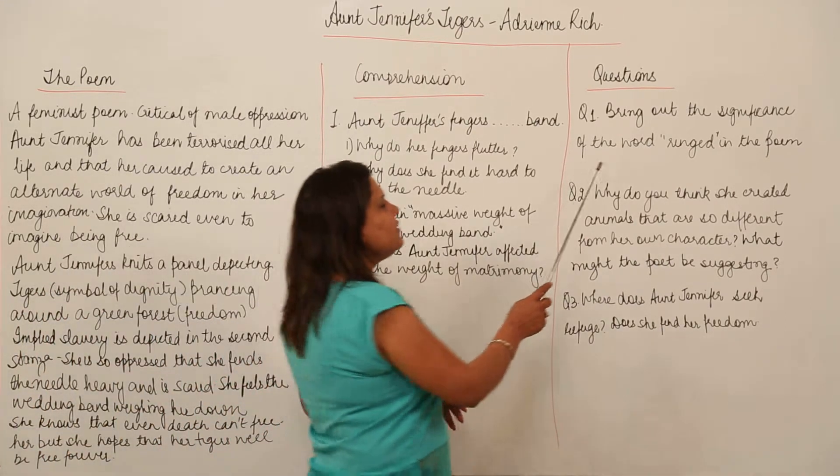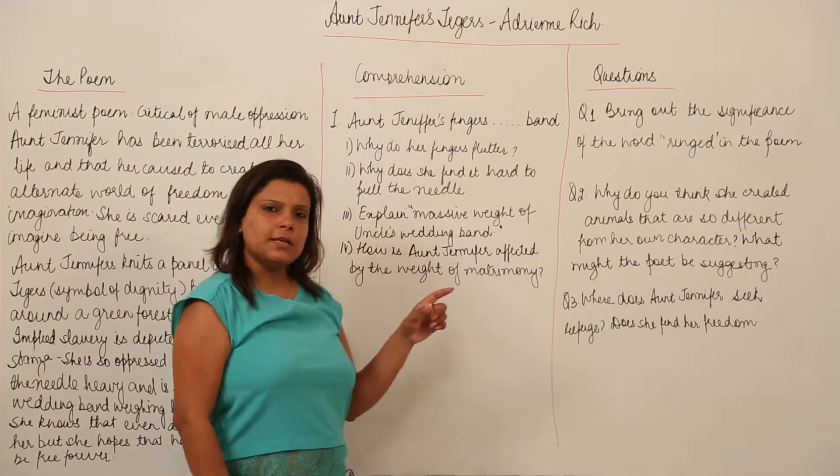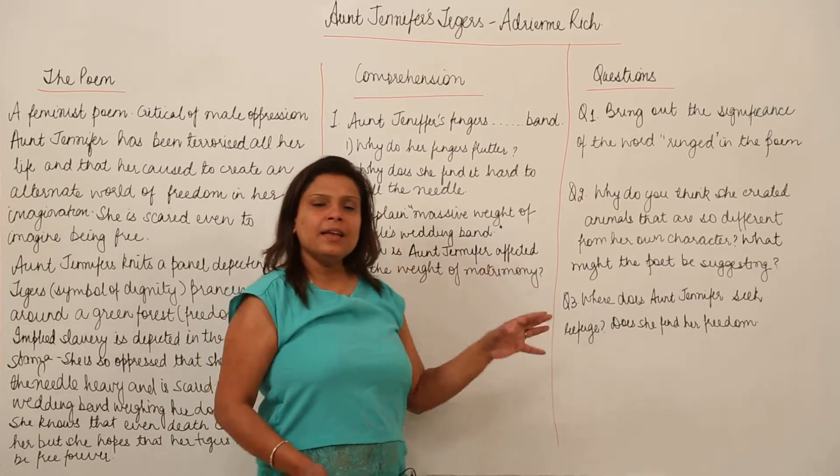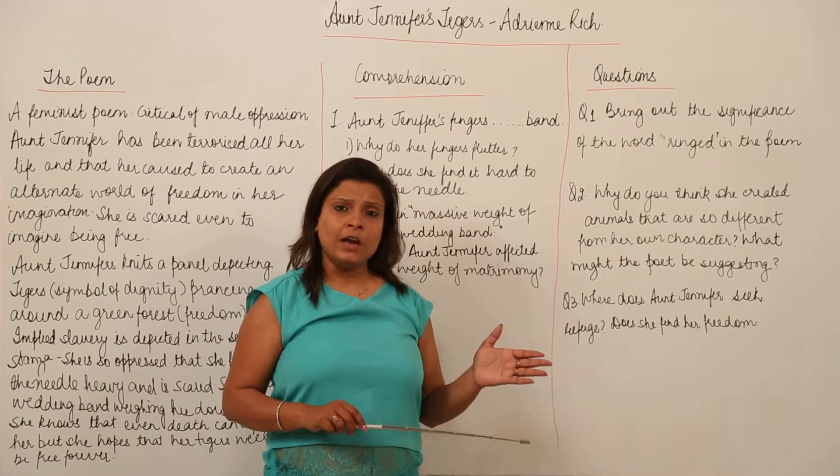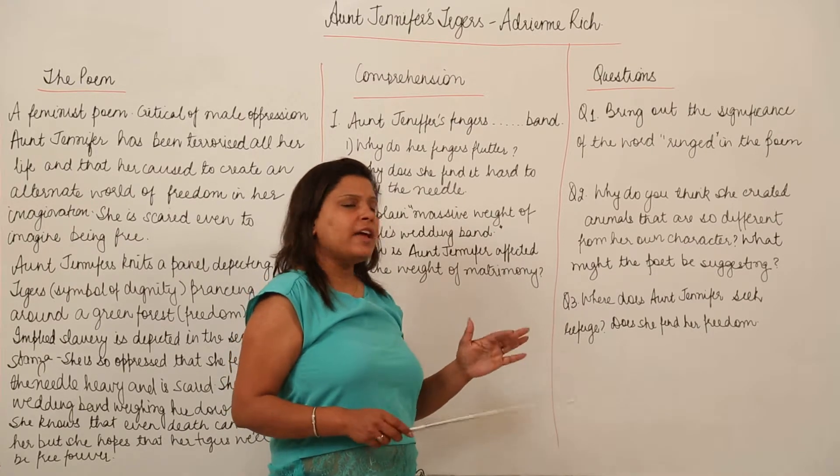Now bring out the significance of the word ringed in the poem. The word ringed is used in the last stanza, the third stanza. But before that we have a reference to the wedding band. The ring at that point is a wedding band which binds people, one person to another in a holy matrimony and also for life.